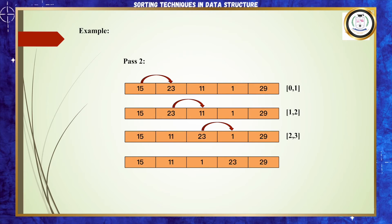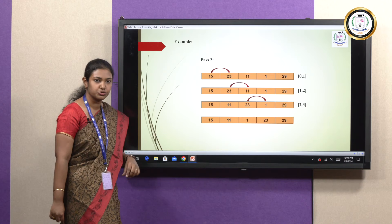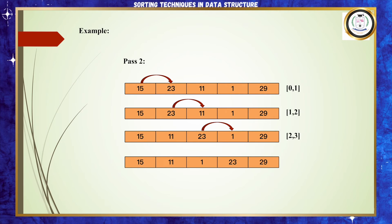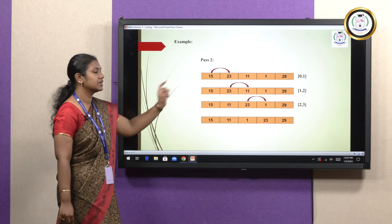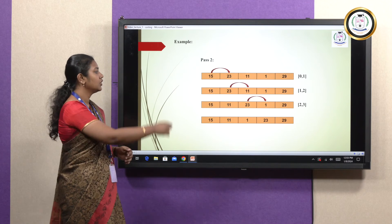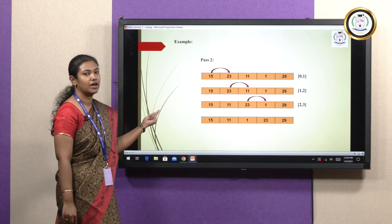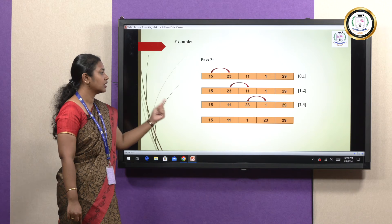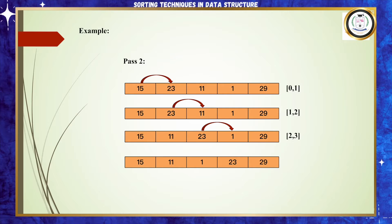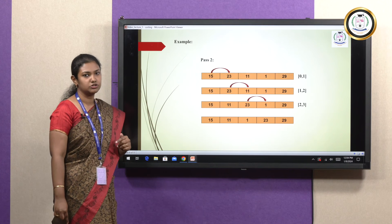In the second pass, we start with 15, 23, 11, 1 and 29. Comparing the first two elements — index 0 and index 1 — they are in sorted order, so we ignore and move on. Comparing the second and third elements, 11 is smaller than 23, so they are swapped. After swapping we have 15, 11, 23, 1 and 29. Comparing the third and fourth elements, 1 is smaller than 23, so they are swapped. The result of pass 2 is 15, 11, 1, 23 and 29.